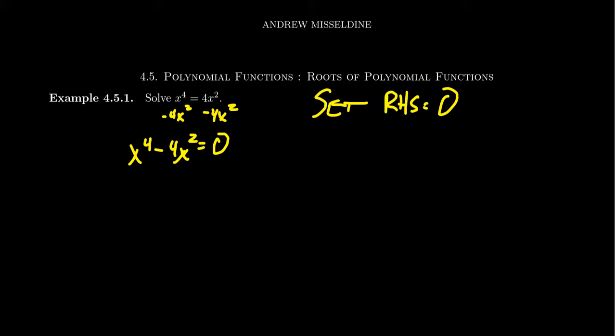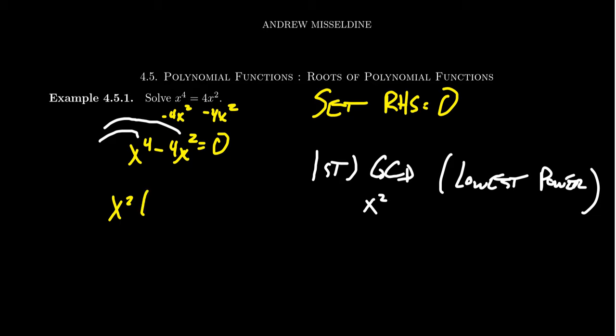The first thing to do whenever you're factoring is look for the GCD, the greatest common divisor. If you look at the coefficients, you have 1 versus a negative 4, 1's the only thing common there. But when you look at the powers of x, you have x to the fourth and x squared. When you're looking for the GCD of these exponents, you're looking for the lowest power. We can factor out an x squared in this situation. Factoring out the x squared, you would leave behind x squared minus 4 equals 0.